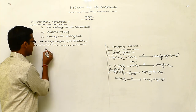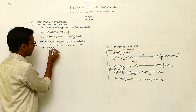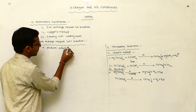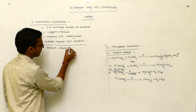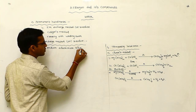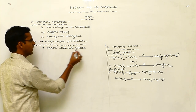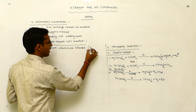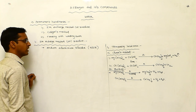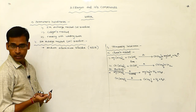Sodium aluminum silicate can be represented as NAZ, where Z stands for aluminum silicate.